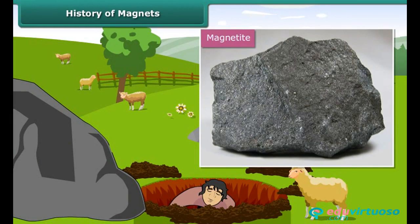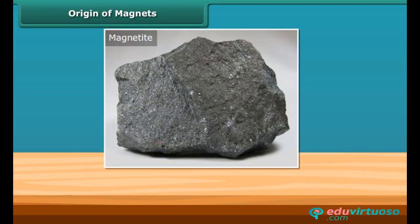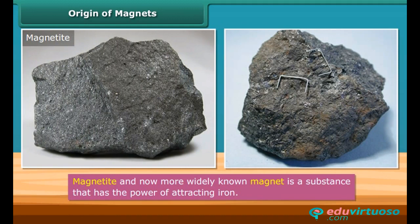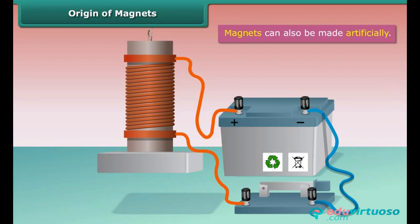This type of rock was subsequently named magnetite, which was named after Magnus himself. Magnetite is a natural magnet and contains iron. In the later days, this was more widely known as a magnet. A magnet is a substance that has the power of attracting iron. Magnets can also be made artificially. However, the process of making artificial magnets is a recent discovery.